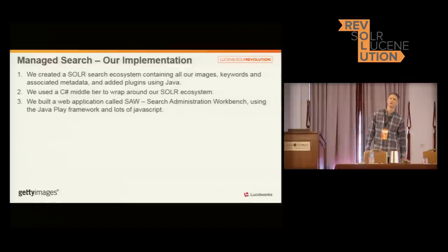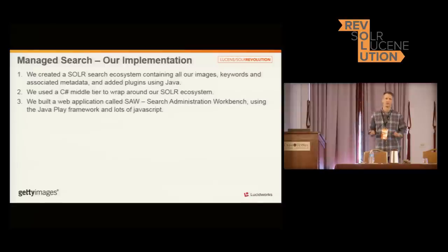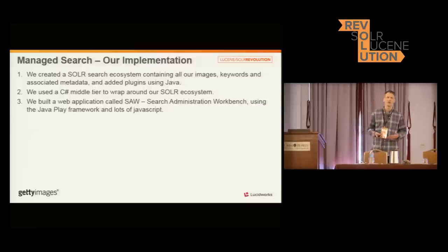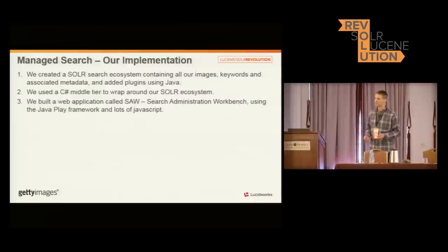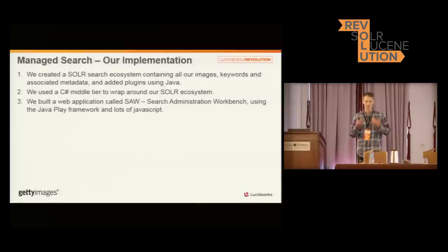So how did we implement this at Getty? Three layers. We have the Solr Lucene layer. We have a middle tier written in C#, which is responsible for generating the select queries passed to Solr and also for parsing the JSON responses. Other technology teams who want to interact with search — from our site, our API, internal tools — don't have to really know much about Solr or work out how to construct the query URLs. It also allows us to control what they're allowed to do, so they can't go off and do a facet on every field on every asset and bring our site down. And lastly, we have the web application for the business users called SAW — our Search Administration Workbench — written in the Java Play framework with lots of JavaScript. Those first two layers are also used to serve up searches to customers on the site.